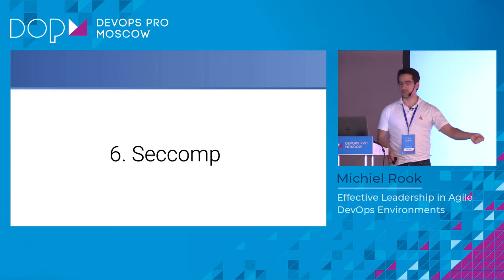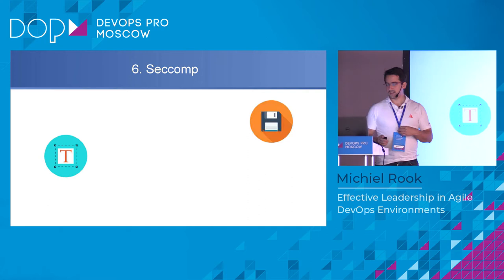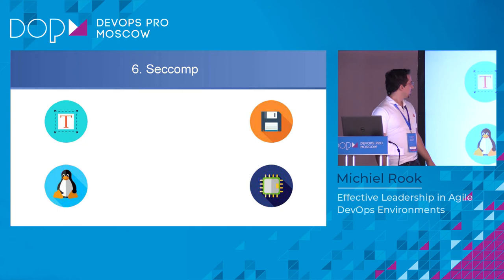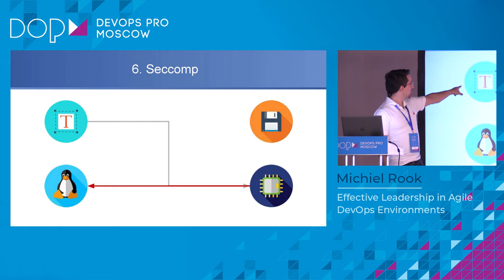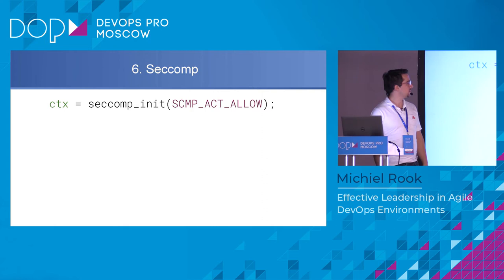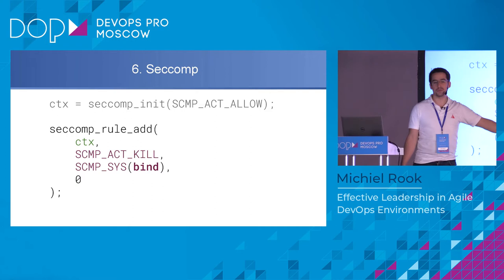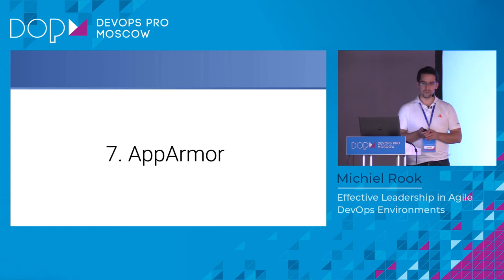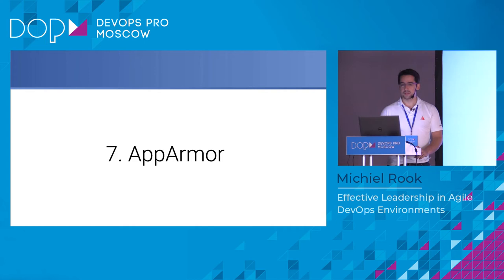Until now we've dealt with accessing resources. What we haven't limited are the system calls. When a program wants to access some data, it cannot directly go to the disk — the CPU redirects it to the Linux kernel, which actually accesses the disk. This is called a system call. There are dangerous system calls, so we want to limit them, and seccomp is a way of doing that. In code, we initialize seccomp with a default 'allow' setting, then add a rule to forbid the bind system call — so that program can no longer open a port to run a web server — then load the profile.